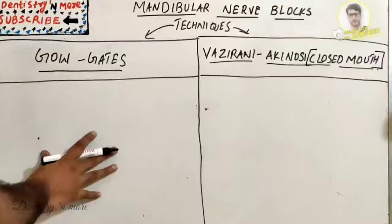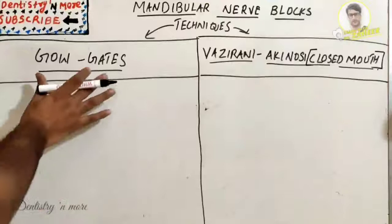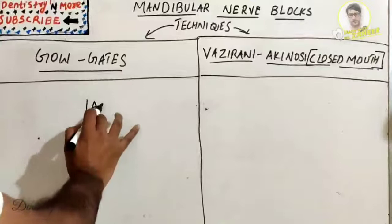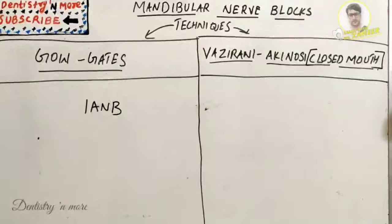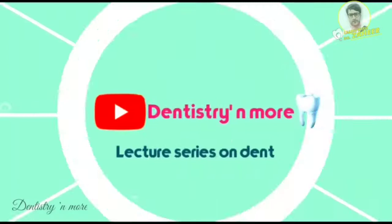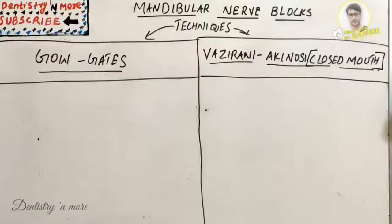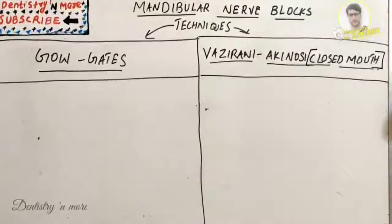Welcome back to another session in Dentistry and More. Today's topic in oral surgery is the mandibular nerve block techniques. We have two techniques: the Go-Gates technique and the Vizirani-Akinosi closed mouth technique. When the IANB technique fails or is not effective, we can go for either of these techniques.